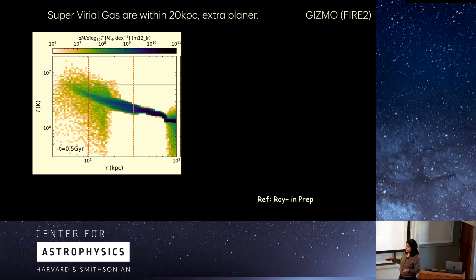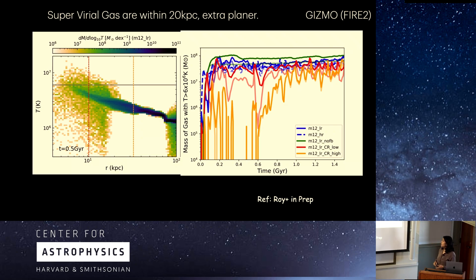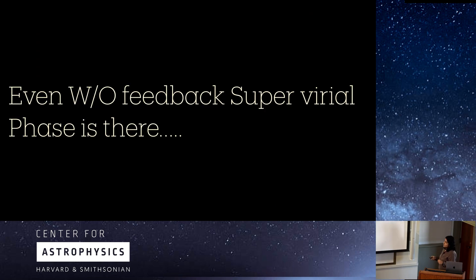This is not just one snapshot — we catch the super virial phase across many different snapshots and different variations of our run: low resolution, high resolution, with cosmic rays, low cosmic ray, and high cosmic ray. Surprisingly, we also see this gas in a no-feedback run. So feedback is apparently not the dominant heating process in our simulation.